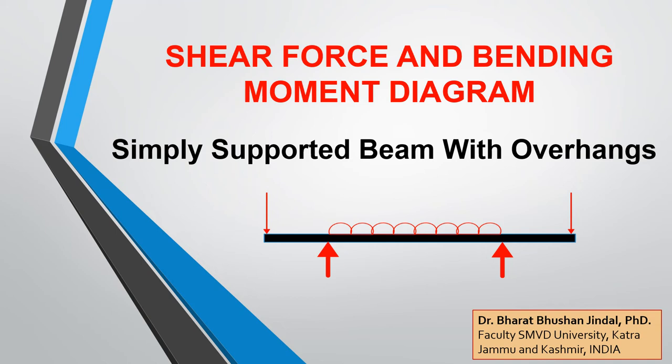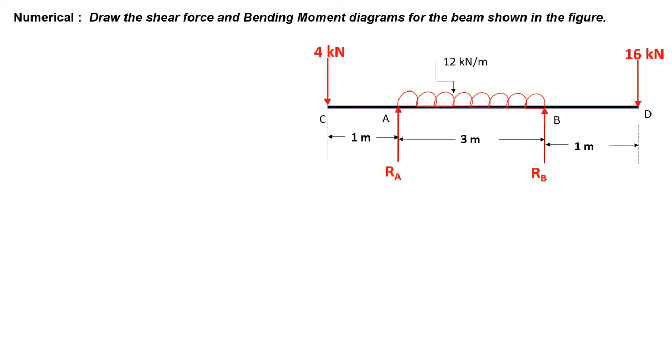Dear students, today in this lecture we will solve a numerical problem in which we have to draw shear force and bending moment diagrams. The beam is a simply supported beam with overhang. As you can see from this diagram, this horizontal beam is simply supported in between and it has two overhangs. It is loaded with concentrated loads at both ends and a uniformly distributed load applied on the simply supported portion.